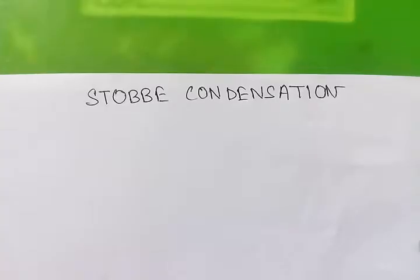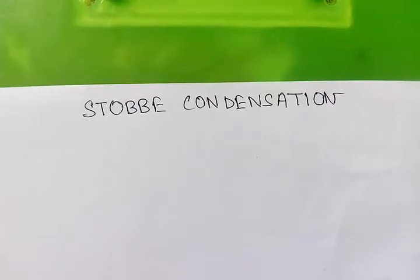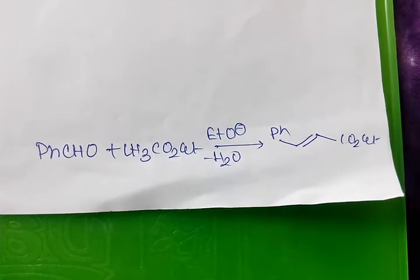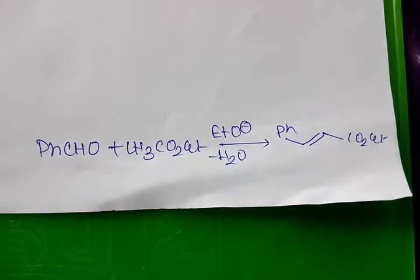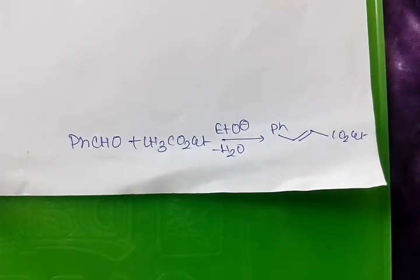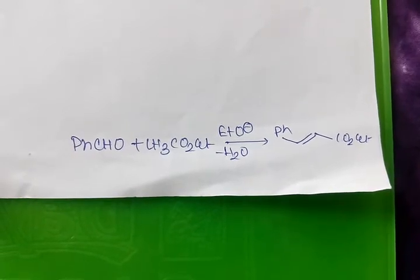This video is about Stobbe condensation. Stobbe condensation is an ester condensation reaction. Ketones normally react with esters in presence of base by a mechanism in which the enolate from a form of ketone displaces alkoxide ion from ester.